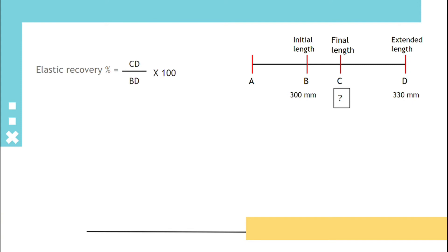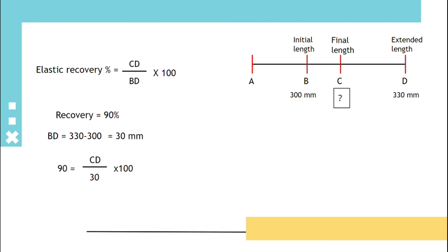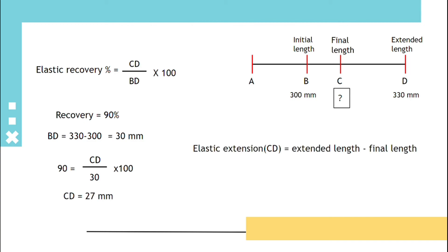Elastic recovery is given by CD upon BD multiplied by 100. Given that recovery is 90% and BD = 330 − 300 = 30 mm, substituting into the equation we get the CD value as 27. We know that CD, as per the diagram, is extended length minus final length. Substituting CD and extended length, the final length will be 330 − 27, that is 303 millimeter.